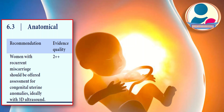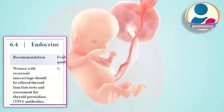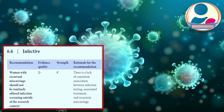Women with recurrent miscarriages should be offered assessment for congenital uterine anomalies, ideally with 3D ultrasound, and thyroid function tests with thyroid peroxidase antibody assessment. They should not be routinely offered immunological screening such as HLA, cytokine, and natural killer cell tests, nor infection screening, outside of a research context, given the lack of consistent association between infection testing and recurrent miscarriage.